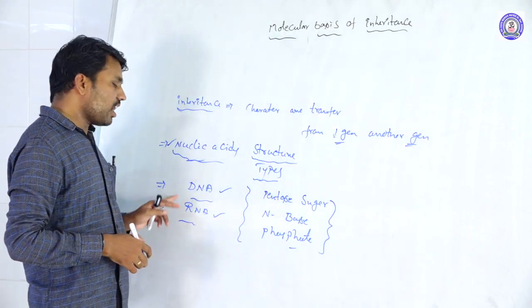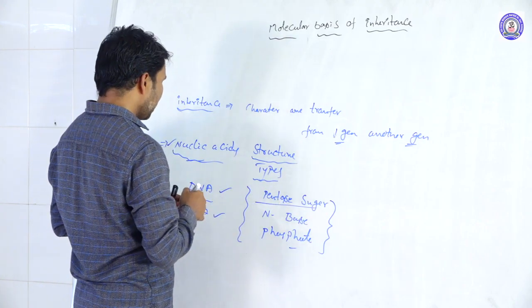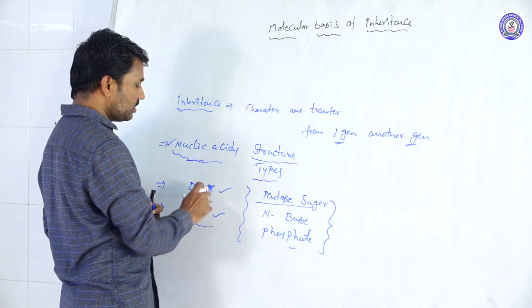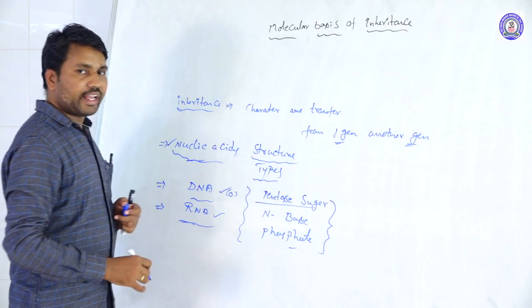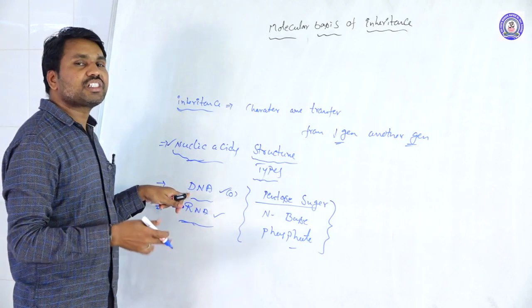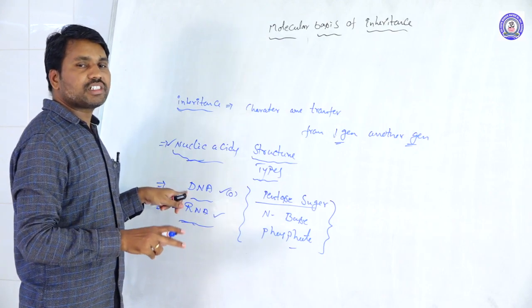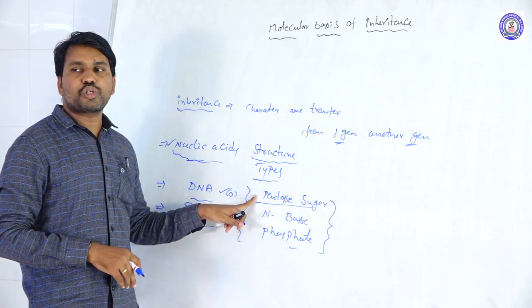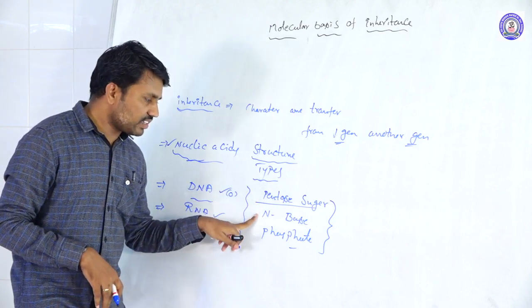In deoxyribonucleic acid (DNA) or ribonucleic acid (RNA), the difference is that one oxygen is removed from the ribose sugar to form deoxyribose sugar. The pentose sugar is essentially a ribose sugar. In this ribose sugar, specific nitrogen bases are attached.